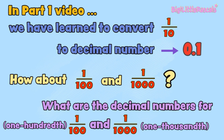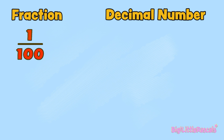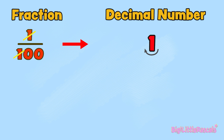First, let's look at one-hundredth. Let's divide 1 at the top by 1 at the bottom — it gives us 1. Because there are still two zeros left at the bottom, we need to jump two times to the left: 1, 2. We add 0 for each empty jump, then add the decimal point after that, and add 0 at the front to indicate that this is less than 1 whole. Got it? Great work!